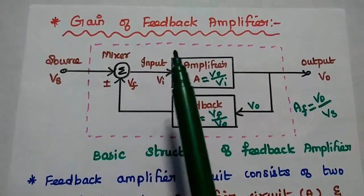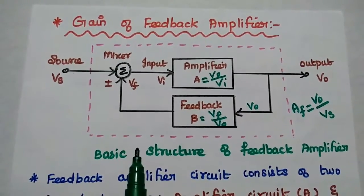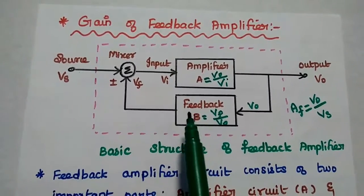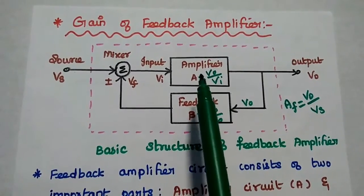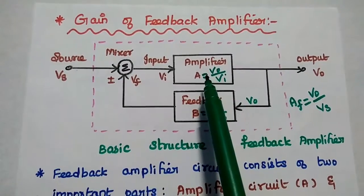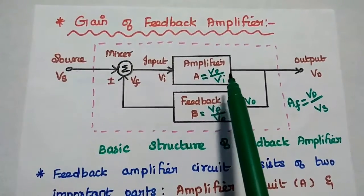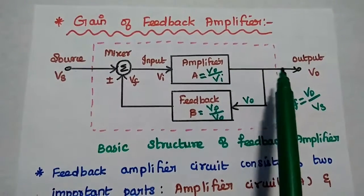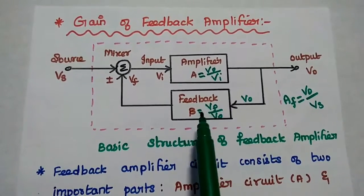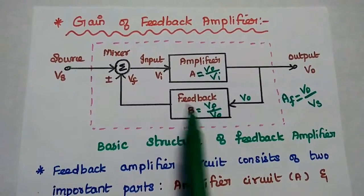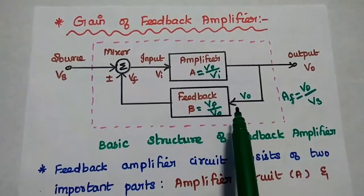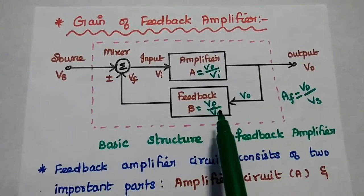Next, we are going to derive the gain of the feedback amplifier. Consider the basic structure of the feedback amplifier — it has two important circuits: the amplifier and the feedback network. The gain of the amplifier A is equal to output by input, that is V0 by Vi. The gain of the feedback network is beta, which is equal to Vf by V0.